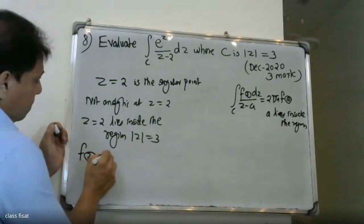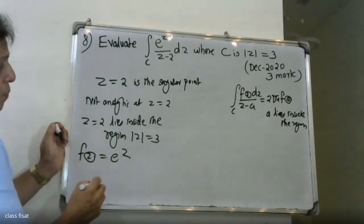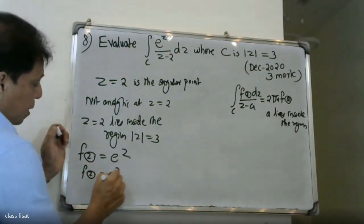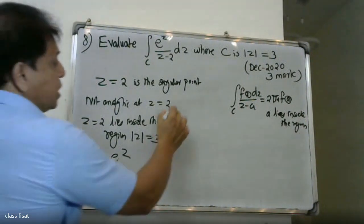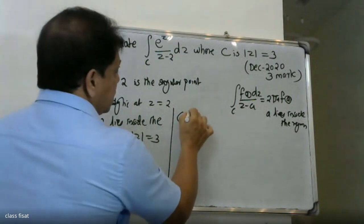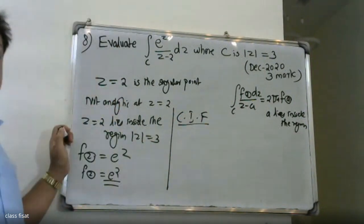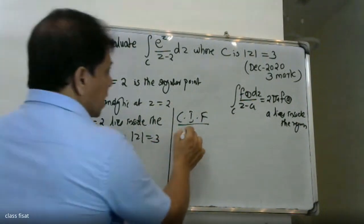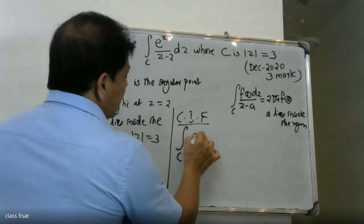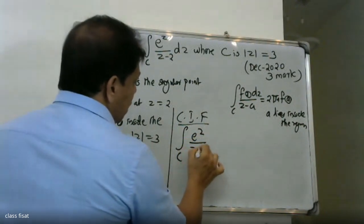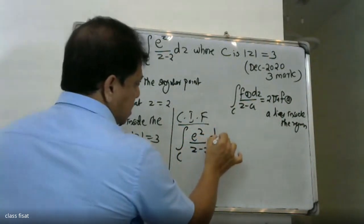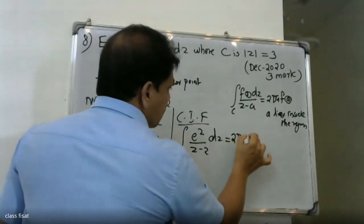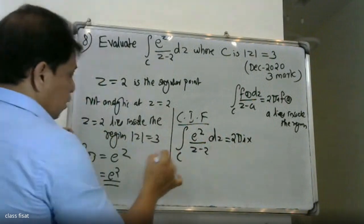So applying Cauchy's integral formula: the integral of C, F of Z over Z minus 2, equals 2 pi i into F of 2.